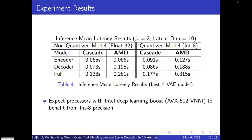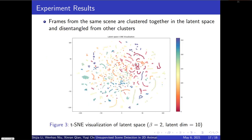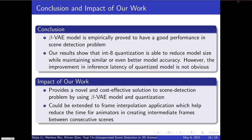However, we do expect processors with Intel Deep Learning Boost to benefit from Int8 precision. We also use t-SNE to visualize our latent space, and we observed that frames from the same scene are clustered together and disentangled from other clusters. Our conclusion is that the Beta VAE model is empirically proved to have good performance in scene detection, and our results show that quantization is able to reduce model size while maintaining similar or even better model accuracy.